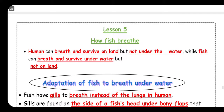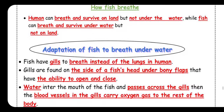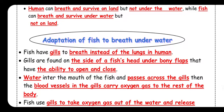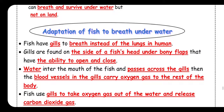All of you know that a human can breathe and survive on land but not under the water. But fish can breathe and survive under the water but not on land. How can fish breathe? You have to know that fish can breathe and survive under the water — but how?